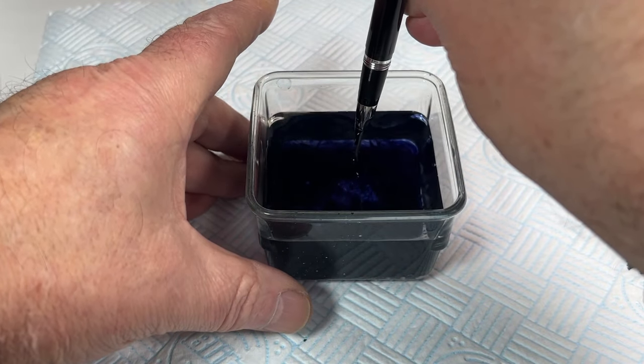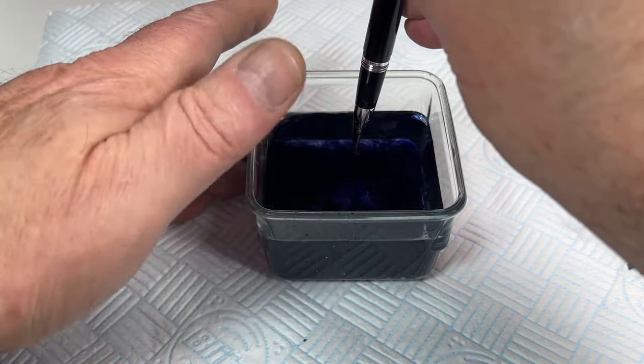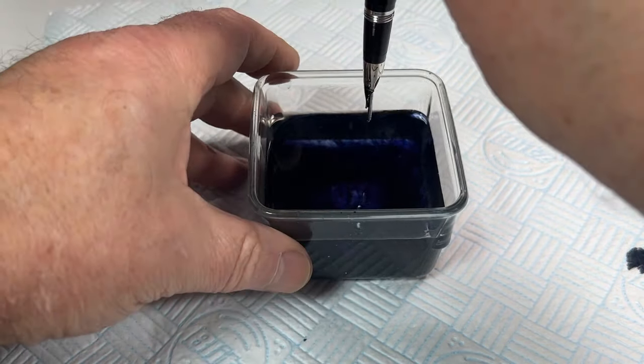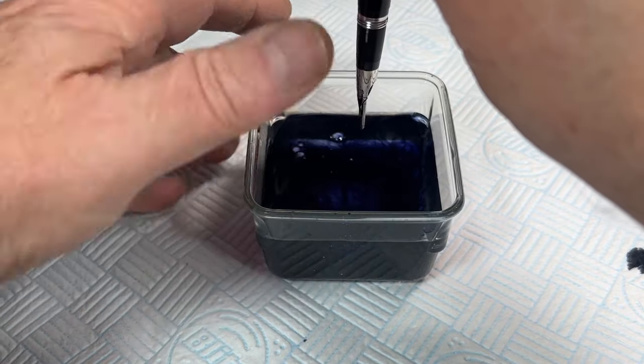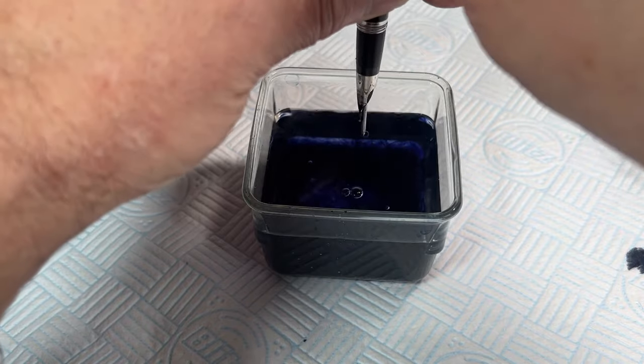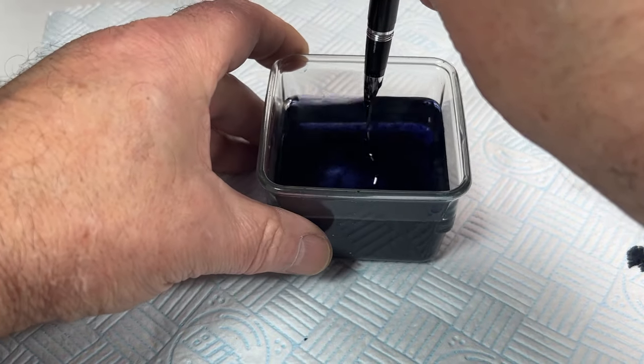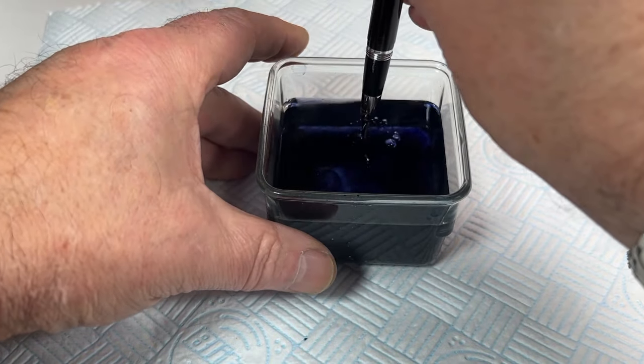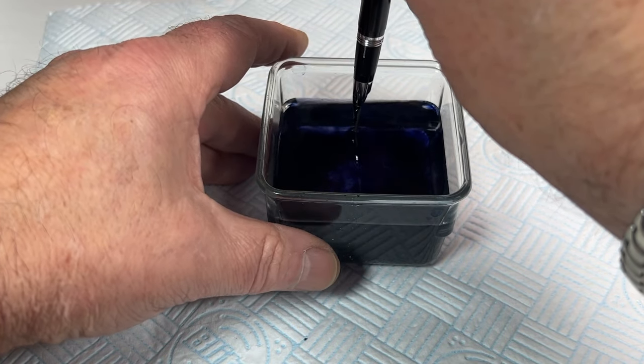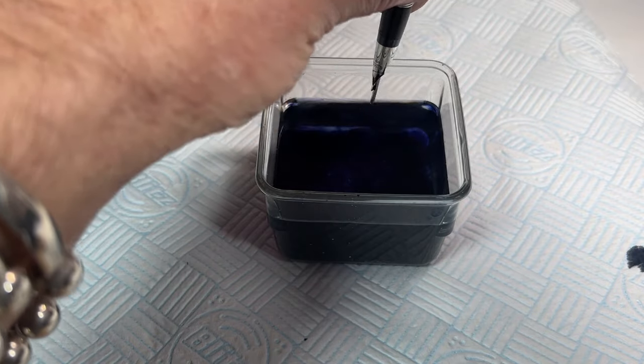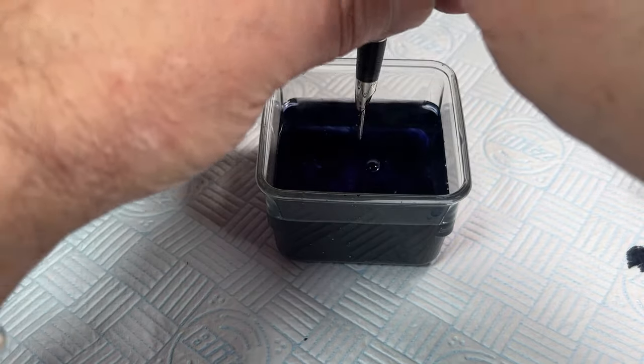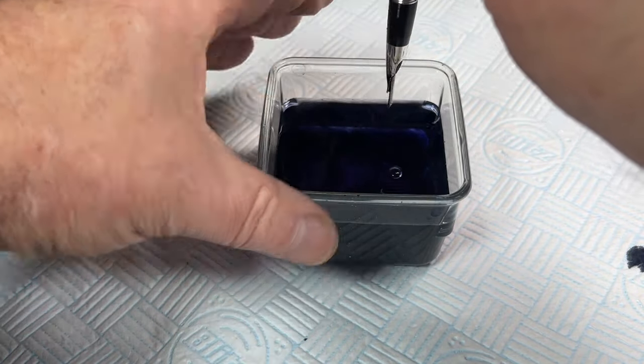So once again, do it over the ink bottle. One more time. There you go. You can see, you can hear the bubbling. Leave it for a few seconds. Pull on the plunger tube. Press down. Let's do it one more time for you people. There you go. Bubbling going on. A few seconds. Pull the plunger out. And press down. There you go.